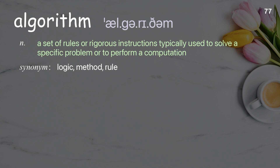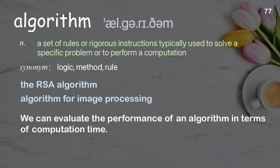Algorithm: a set of rules or rigorous instructions typically used to solve a specific problem or to perform a computation. Examples: the RSA algorithm, algorithm for image processing. We can evaluate the performance of an algorithm in terms of computation time.